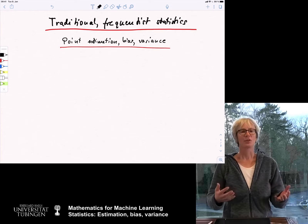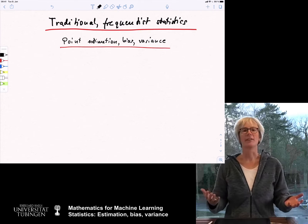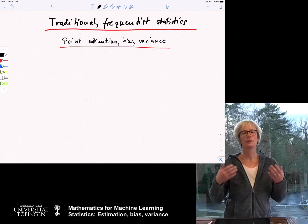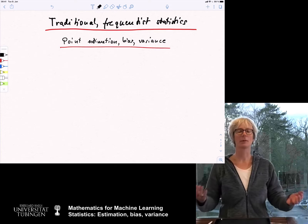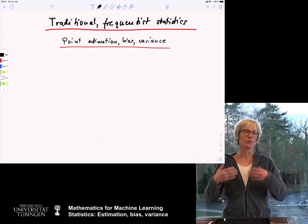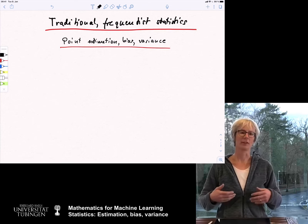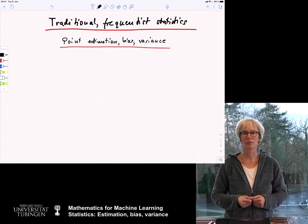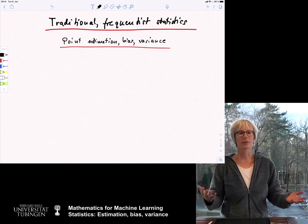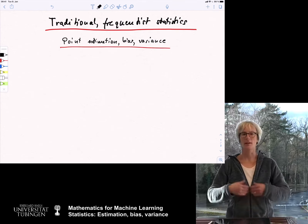Today we want to start with a new chapter in our lecture — we want to look at statistics. When I say statistics, at least in the first couple of lectures I really refer to the traditional frequentist kind of statistics, where we receive some data, typically a sample from an unknown distribution, and we want to learn to estimate some aspects about that distribution, or we might want to test a hypothesis about this distribution. This is the kind of statistics that is very widely used in many areas of science, like in the social sciences.